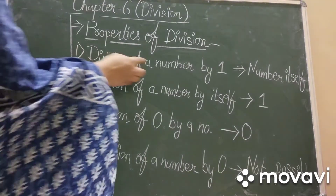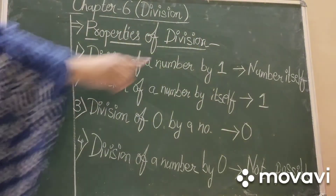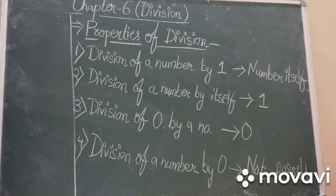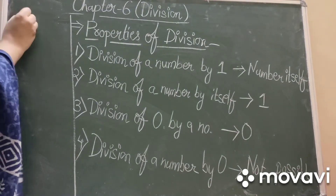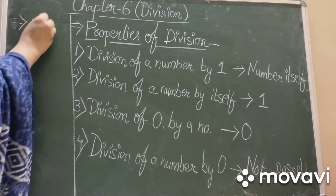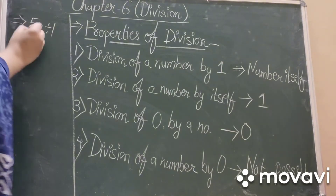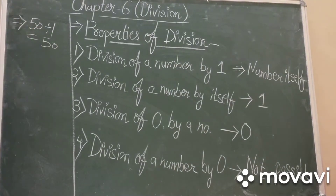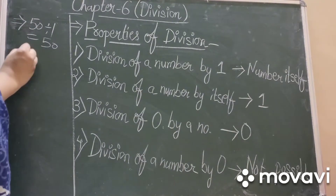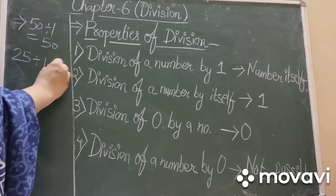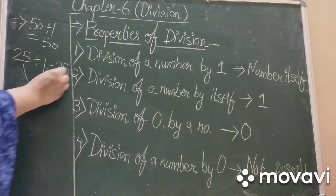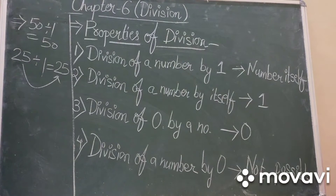Property one: division of a number by one gives you the number itself. When we divide any number by one, the answer is always that same number. For example, fifty divided by one gives fifty. Twenty-five divided by one also gives twenty-five — wohi number aapko result milta hai. This is the first property.